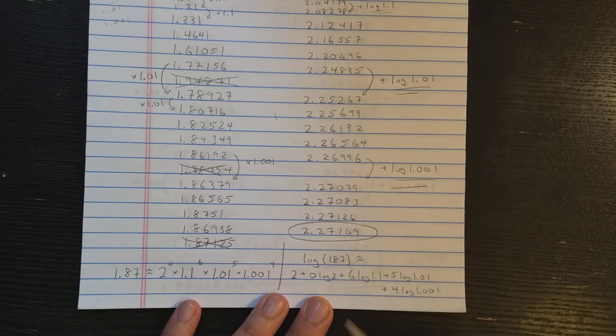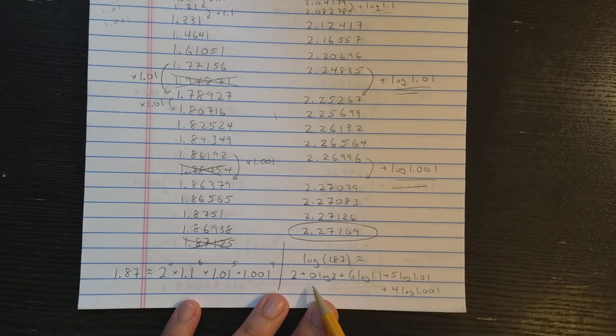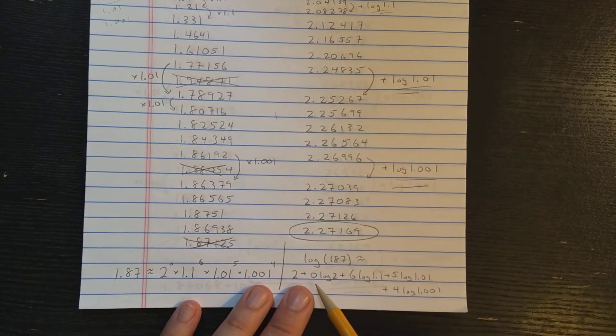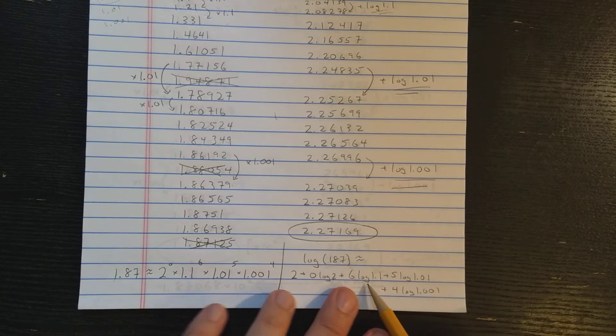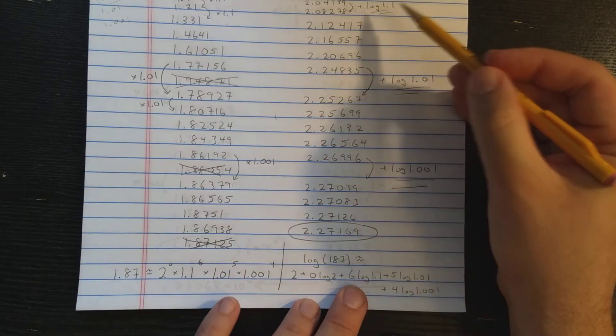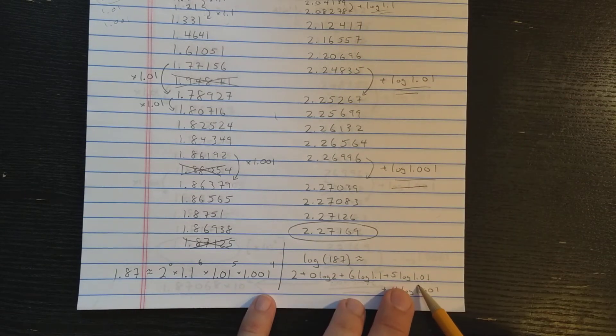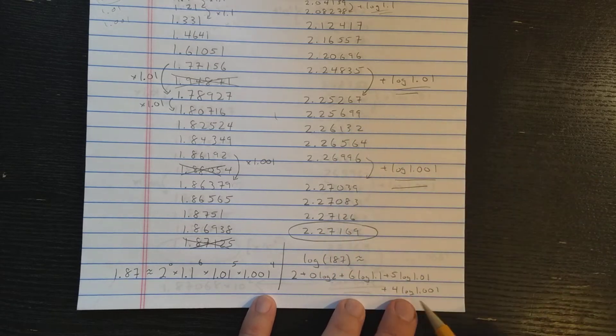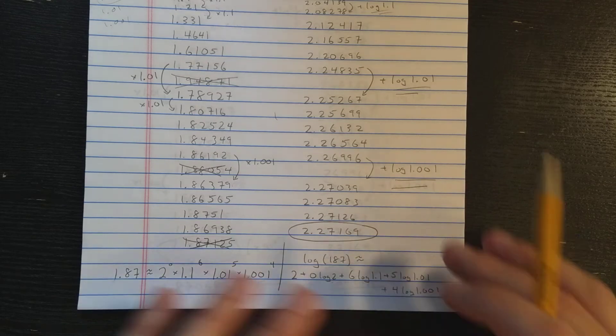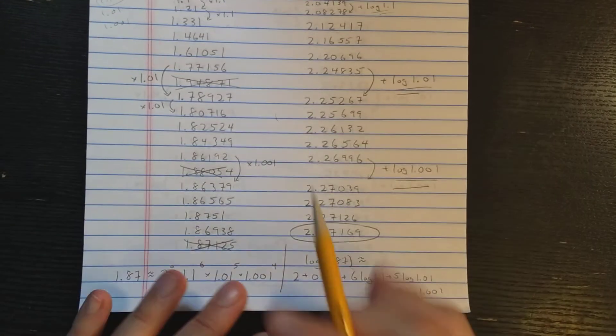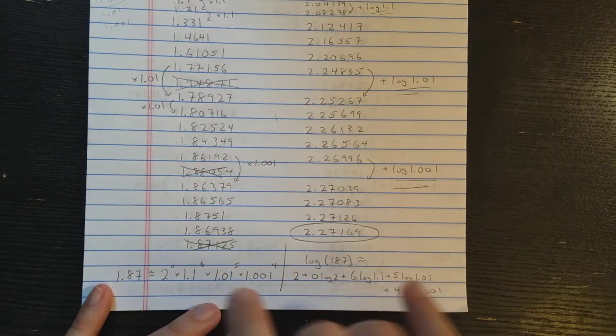In the end, what you've done is you've reconstructed the sum, which we know is going to compute the logarithm. So the 2, which is from this 2, plus 0 log 2s, plus 6 log 1.1s, because you added that 6 times, 5 log 1.01s, added that 5 times, and 4 log 1.001s, because you've added that 4 times. So that's the secret to how this is done on the calculator efficiently.